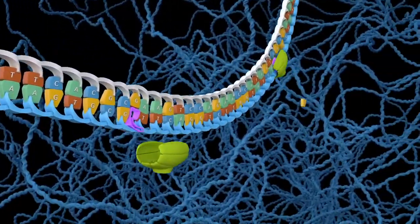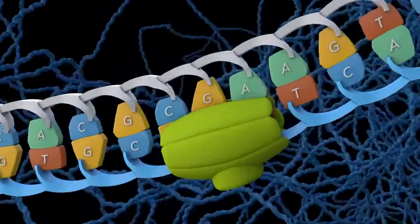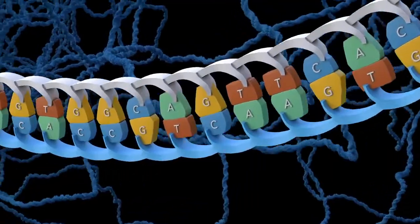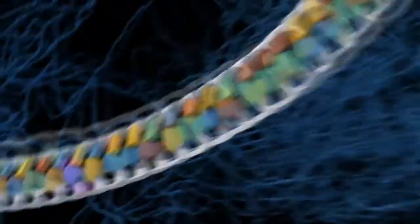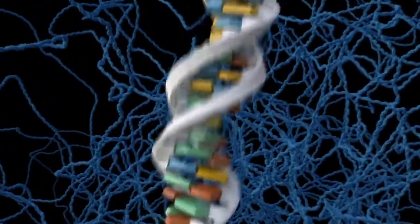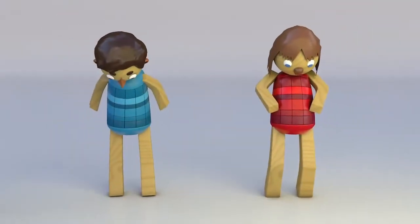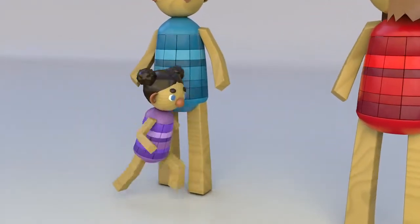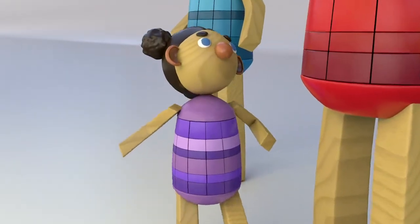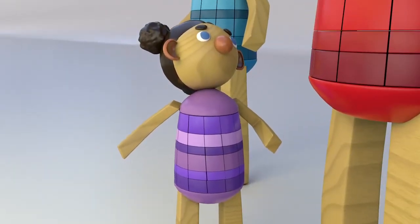The cell is able to repair most of these typos, but each round of cell division introduces a few changes that are not repaired. When DNA changes occur in cells that will give rise to eggs or sperm, they can be passed down to offspring. Each one of us has about 60 new variations that were not present in our parents.